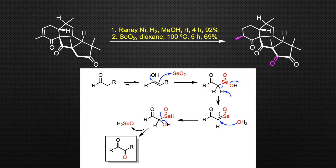The Riley oxidation begins with an attack by the enol tautomer at the electrophilic selenium center. Then, a molecule of water is lost and a second equivalent of water attacks the alpha position. In the final step, selenic acid is released to deliver the 1,2-dicarbonyl product.